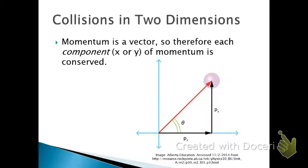So momentum is a vector, which means that each component, the x component of the original momentum and the y component of the original momentum, both of those are conserved.